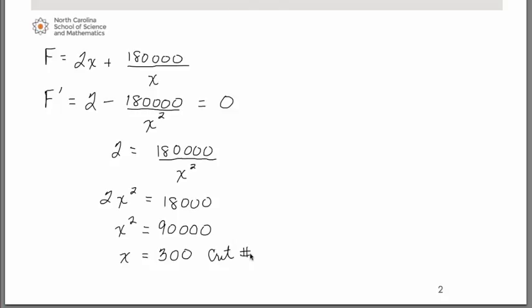We need to go ahead then and verify that this is indeed a minimum. We can do that with a number line analysis. Remember that you're substituting values into the derivative, into f prime. We know it's at 300 that that derivative equal to 0.